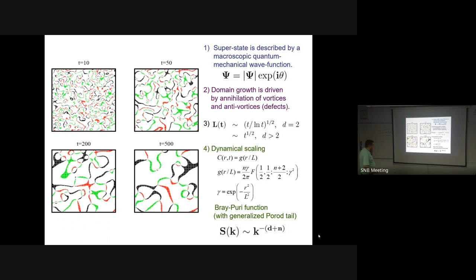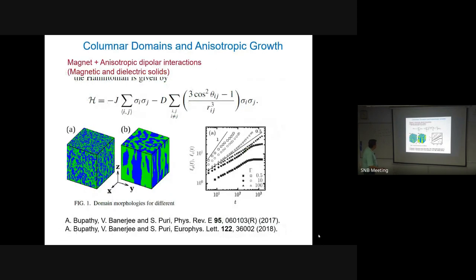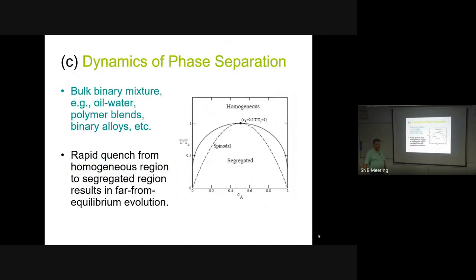That finishes the story of the non-conserved case. Now we start on the second class of problems in the last half hour - the conserved case - which is much more poorly understood. Let's come to the dynamics of phase separation. You have a binary mixture - it's convenient to use oil and water as an example, but it applies to polymer mixtures, brass (zinc-copper), ternary mixtures, etc.